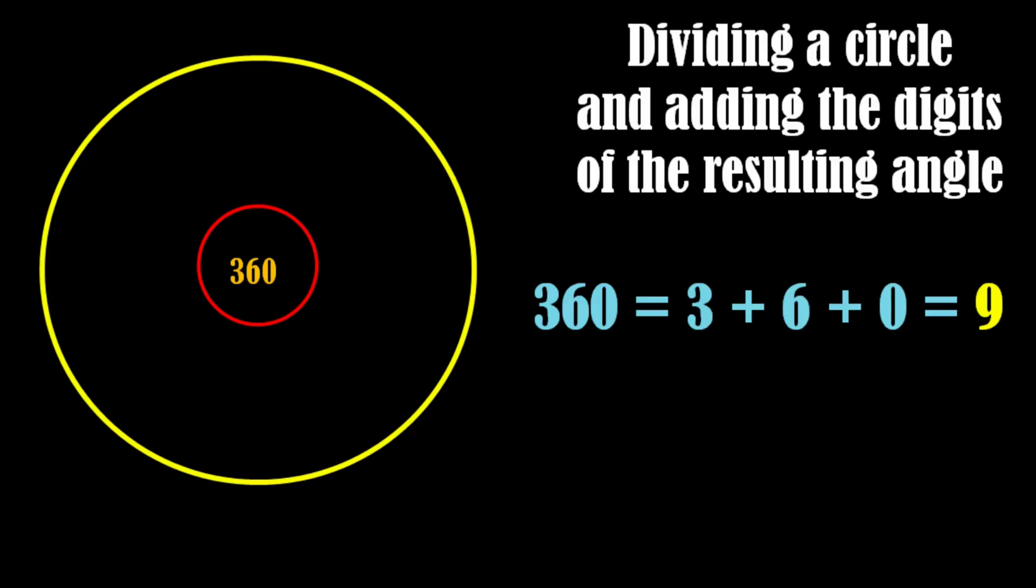Let's divide a circle in half and observe the sum of the digits of the resulting angles. As we know, a full circle encompasses an angle of 360 degrees at its center. On adding up the digits of 360, we obtain the number 9.